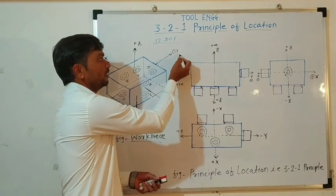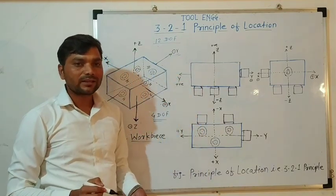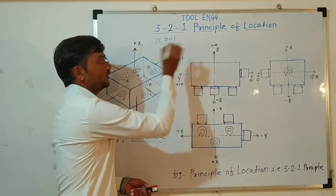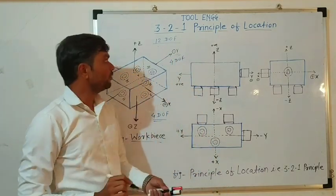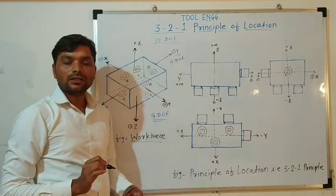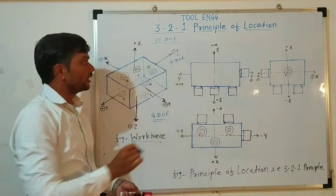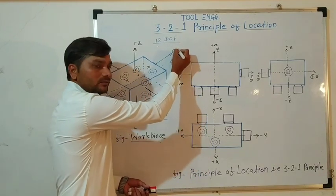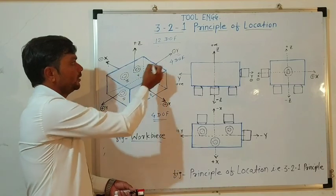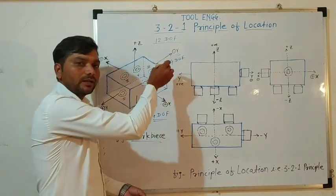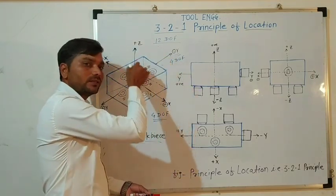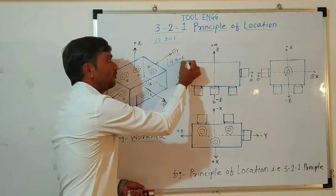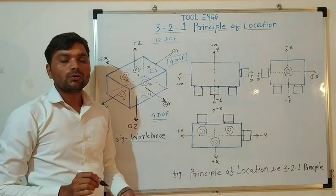Similarly, if we consider the y-axis, then again for the y-axis it has 4 degrees of freedom. There are 2 translatory motions — it can move in the negative y-axis as well as in the positive y-axis — and it can rotate in a clockwise manner along the y-axis as well as in an anticlockwise manner. So we get 4 degrees of freedom over the y-axis.